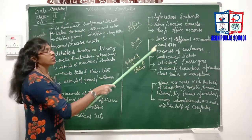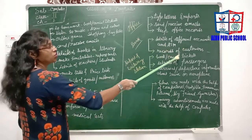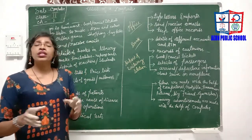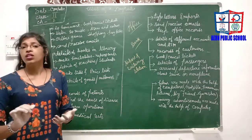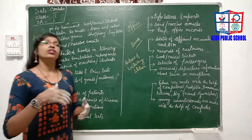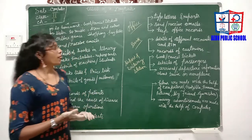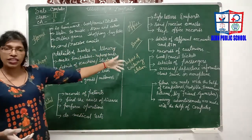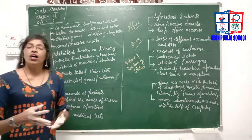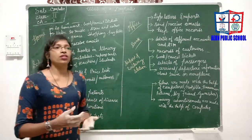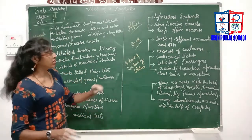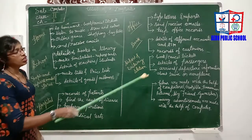In banks, there are thousands of accounts, so it is impossible to write all details in a copy or remember them. That's why computers are used to store details of different accounts, ATM transactions, and records of customers — how much money is in their account, when they withdrew or deposited money.